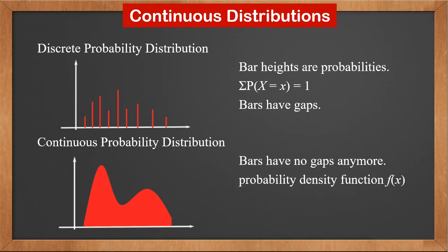We can see that the highest points of those bars form a curve, and we call it a probability density function. Since probabilities can't be negative, all values of a probability density function should be greater than or equal to 0. And the area underneath the curve should be 1, because all probabilities add to 1.